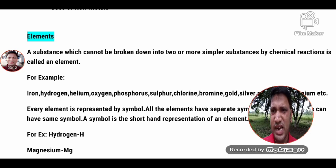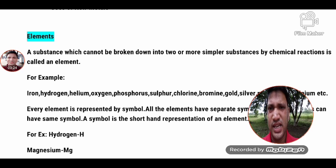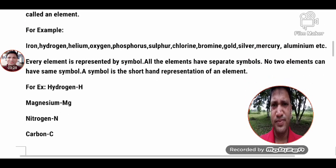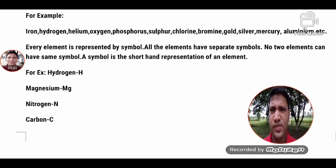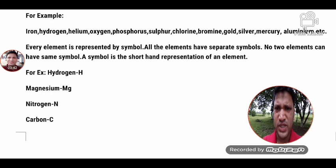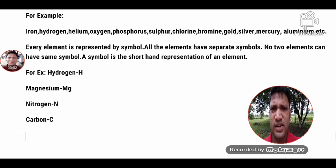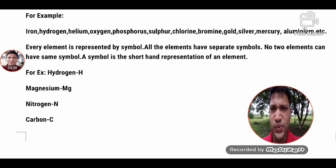Other examples of elements are: iron, hydrogen, helium, oxygen, phosphorus, sulfur, chlorine, bromine, gold, mercury, aluminum, and more. Every element is represented by a symbol. All elements have different symbols — no two elements can have the same symbol.